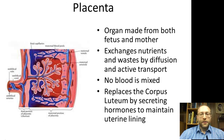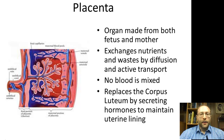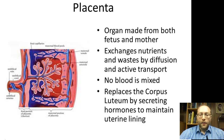Some viruses can cross the placenta and enter the embryo or fetus — HIV is one of those. The placenta allows the exchange of nutrients and wastes between the embryo or fetus and the mother. It's an organ half made by the fetus and half by the mother. The key thing to remember is that no blood is mixed — the blood of the mother comes into no contact with the blood of the fetus. The exchange is done by diffusion, active transport, and facilitated diffusion. The placenta also replaces the corpus luteum by secreting hormones that maintain the uterine lining.